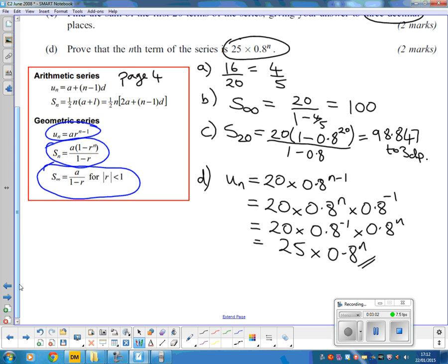It is just worth noting, you could have split that up in a slightly different way. If I've got U_N is 20 times 0.8 to the N minus 1, the other way I could have done that is to recognise that if you're subtracting in the index, that's the same as doing 0.8 to the N divided by 0.8 to the 1.